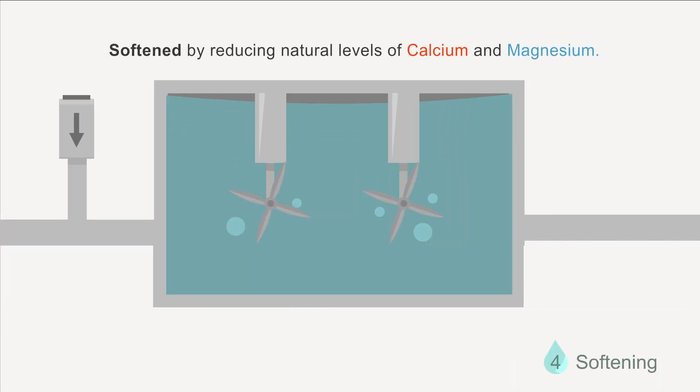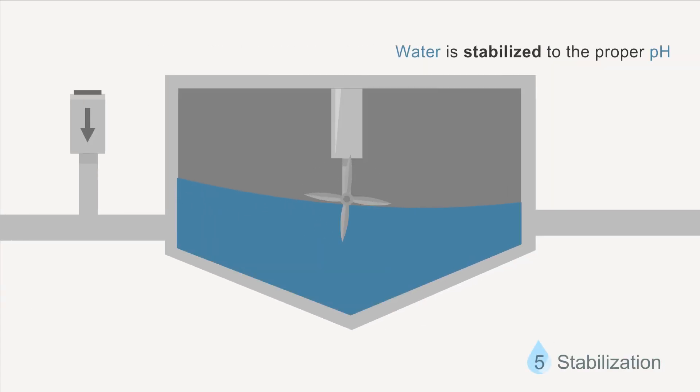Next, the water is softened by reducing its natural levels of calcium and magnesium. Then the water is stabilized to the proper pH.